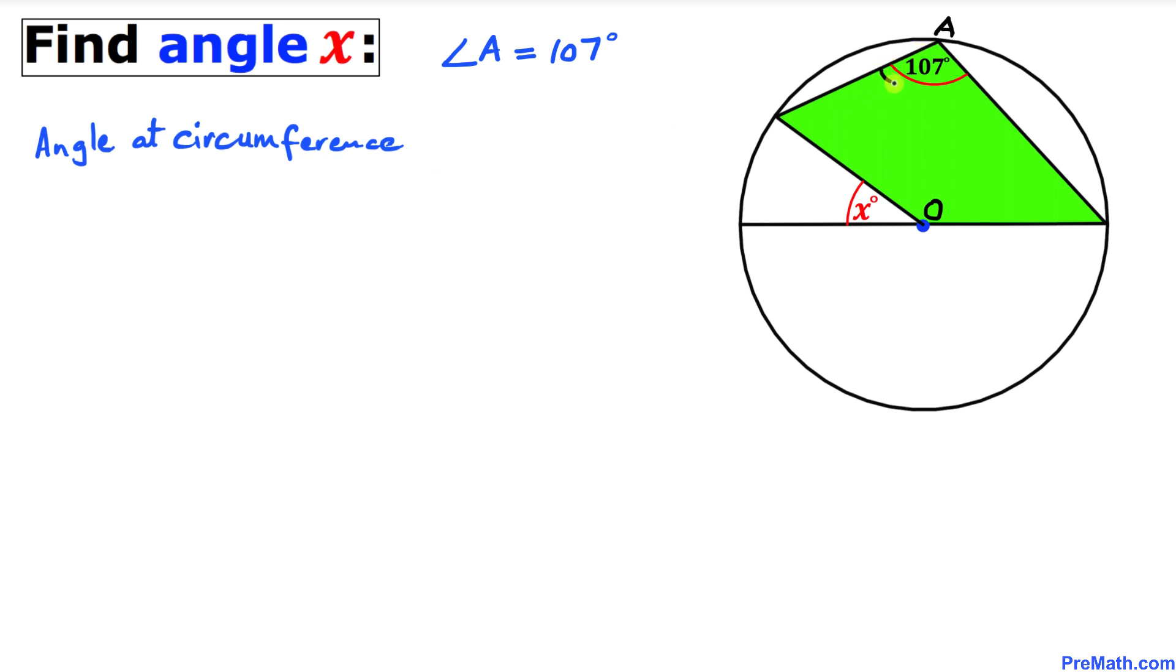Let's focus on angle A, which is 107 degrees. This is an angle at the circumference. Now let's recall a well-known fact: the angle at the center is two times the angle at the circumference.